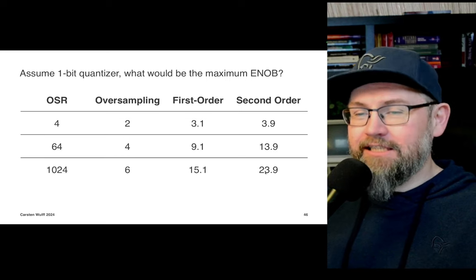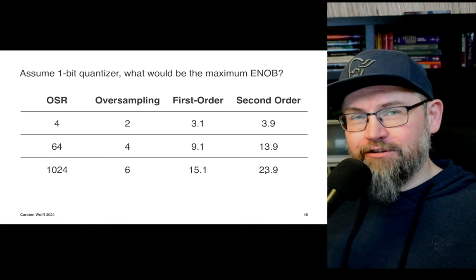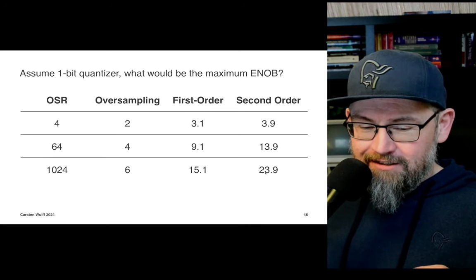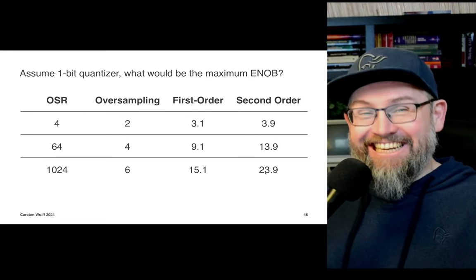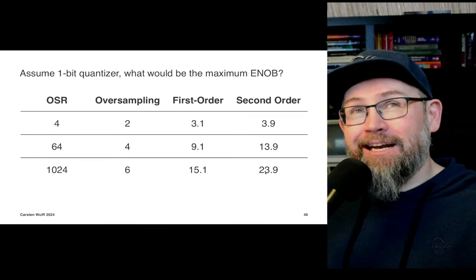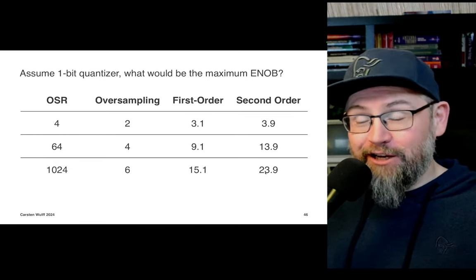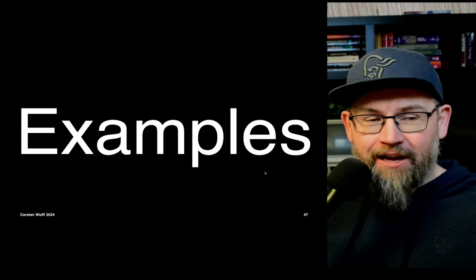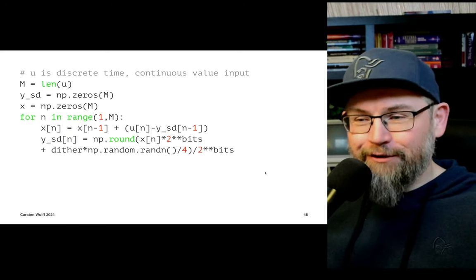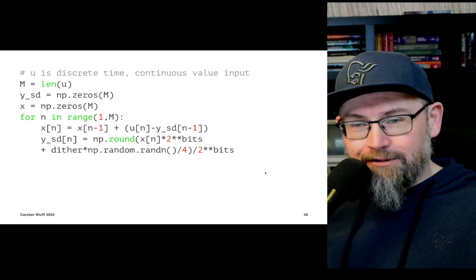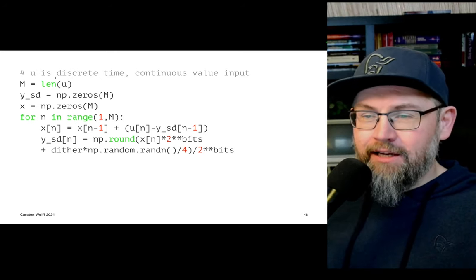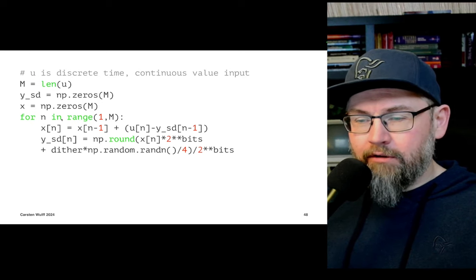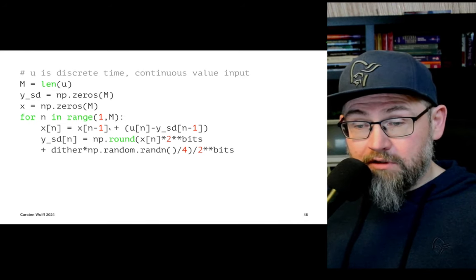Noise shaping is an incredibly fun way of making a circuit, but it's not that easy — it's circuit-complex; you have to care about linearity, offset. You can actually spend your life on making sigma delta modulators. Let's make one in Python — the simplest I can show you — where the input u is discrete-time, continuous-value. I run through each index in the input signal and compute my first-order sigma delta: I take the previous error signal and take my current input value minus the previous output value.